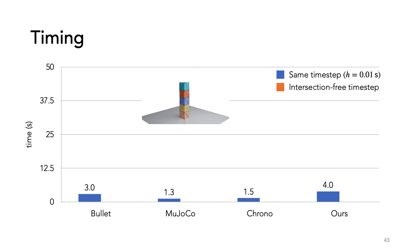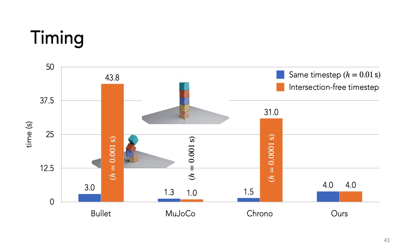For small scenes like this 5 cube stack, our method is comparable in terms of running time to other methods. Plotted here are the running times of three other methods and our method on the right. These timings were generated by using the same time step size of 0.01 seconds, but for the other methods, this large time step leads to intersections. Therefore, we also plot the running time with the time step size we found that avoids intersections. Our method requires no change because it is intersection-free at any time step size.